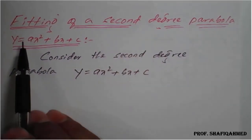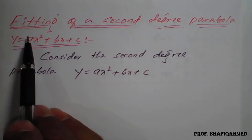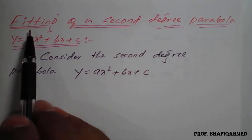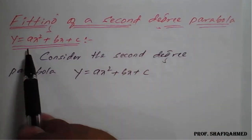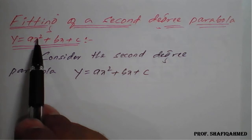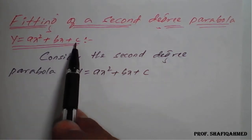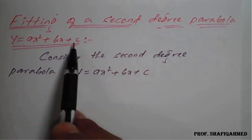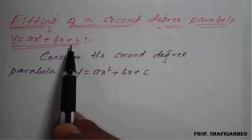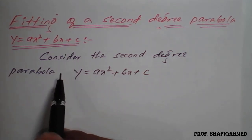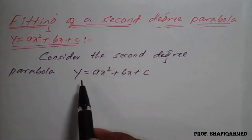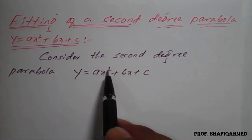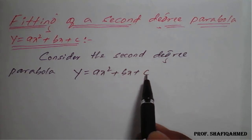Hello students, in today's lecture we will see another fitting of curve — that is, fitting of a second degree parabola: y = ax² + bx + c. We will see how to fit this second degree parabola. Consider the second degree parabola y = ax² + bx + c.